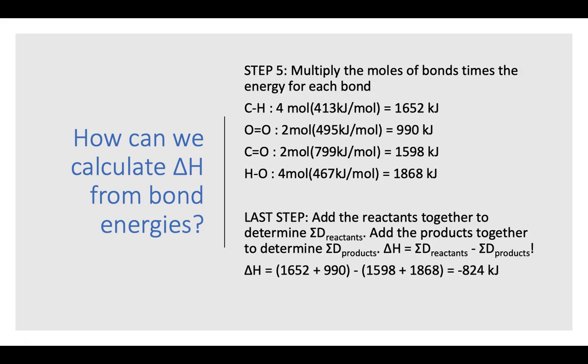What we need to do then is since those bond energies are given in kilojoules per mole, I have to multiply that by the number of moles of each bond that are present. So we said we had four carbon to hydrogen bonds. So if I've got four of those in my reactant, then I need to multiply that bond energy times four. And so that would be the total amount of energy that's going to be absorbed to break those four moles of carbon to hydrogen single bonds.